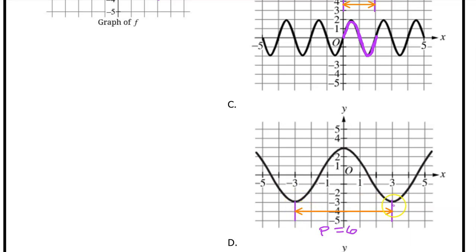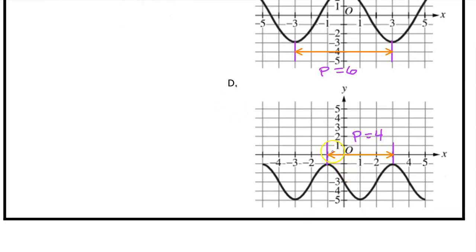Measuring from minimum to minimum, we see that function C has a period of 6, so C is out. However, measuring from peak to peak on function D, we do see that the period is 4, so the answer is D.